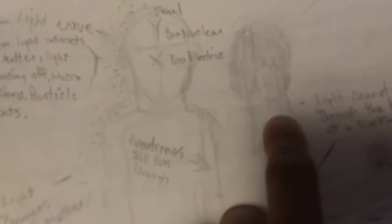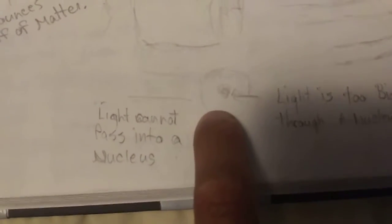Neutrinos and photons are still going to pass through you, but the main body of light has mass, and it bounces off of you. That's why there's a shadow. I mean, that's common sense. Light cannot pass into the nucleus of an atom.